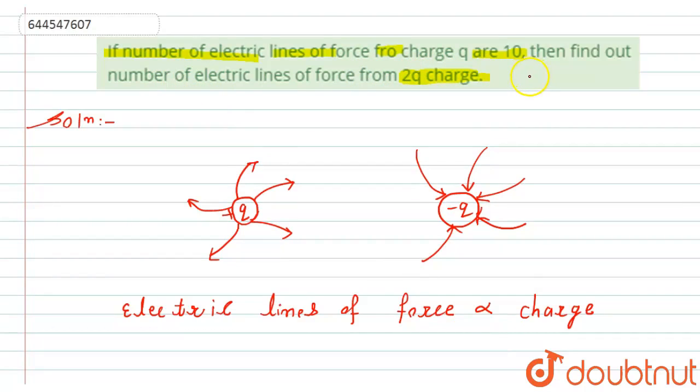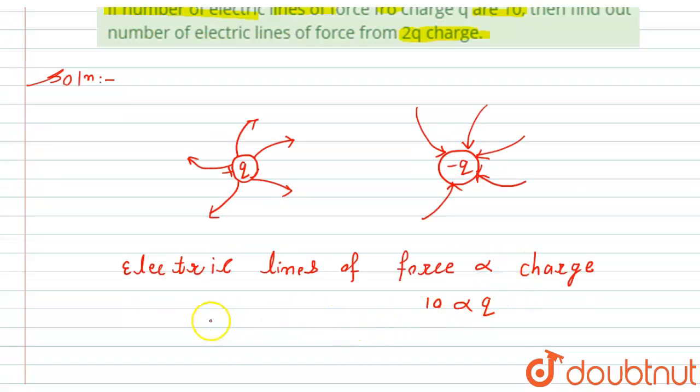Okay, so here the electric lines of force is 10 for the charge q. So from here, to find out the electric lines of force for 2q charge, we will simply say if the charge is 2q, then electric lines of force will be 20.